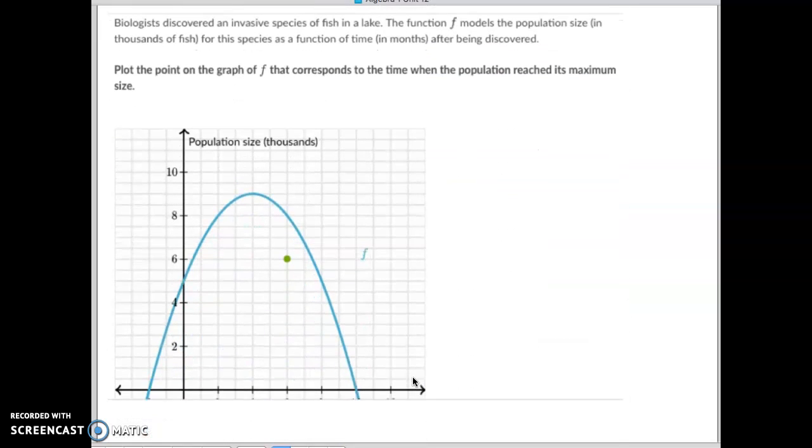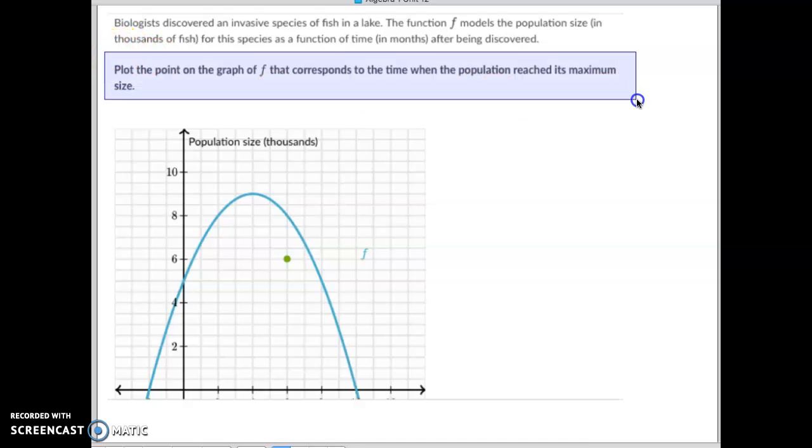Next one and the last one, again I'm only reading the question right here. Plot the point on the graph that corresponds with the time when a population reach its maximum size.